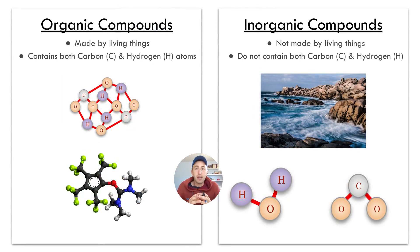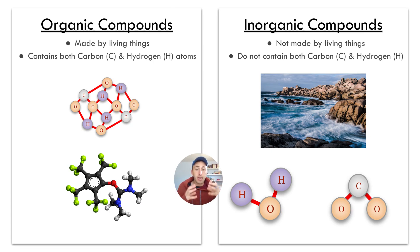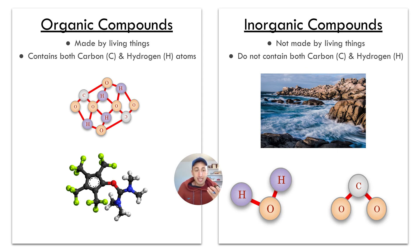There are two types of compounds: organic compounds and inorganic compounds. Organic compounds are made by living things — they contain both the carbon atom and the hydrogen atom, the C and the H. Inorganic compounds are not made by living things, such as water, rocks, and gases like CO2 in the atmosphere. They do not contain both C and H; they can contain either a C or an H, but if they contain both, it would be considered an organic compound.